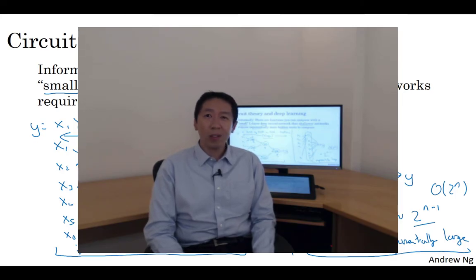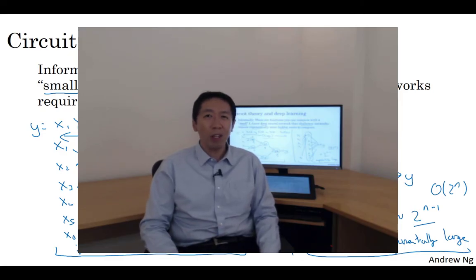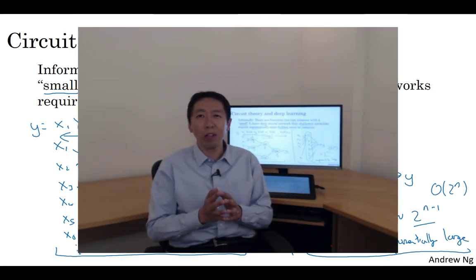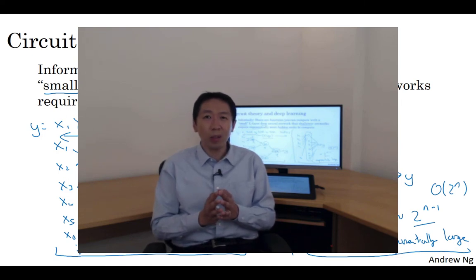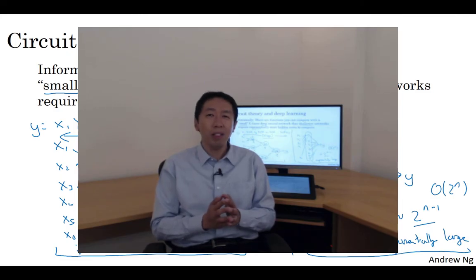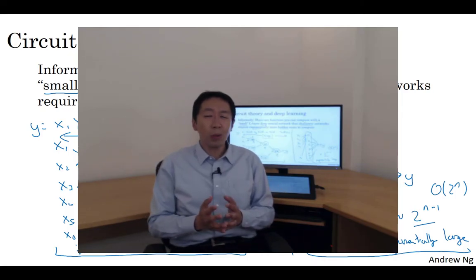Sometimes people go overboard and insist on using tons of hidden layers, but when I'm starting out with a new problem, I'll often really start out with even logistic regression, then try something with one or two hidden layers, and use that as a hyperparameter that you tune in order to try to find the right depth for your neural network. But over the last several years, there has been a trend to people finding that for some applications, very very deep neural networks with maybe many dozens of layers sometimes can sometimes be the best model for a problem.